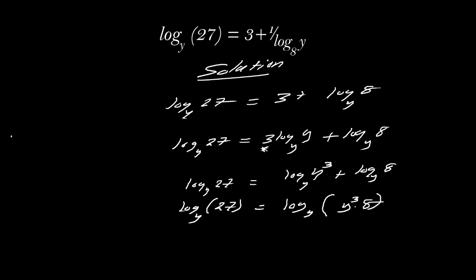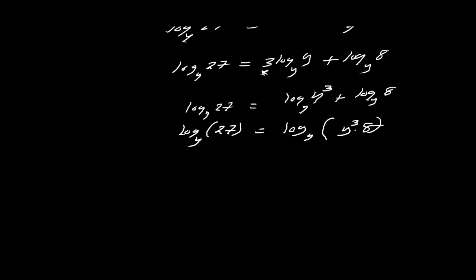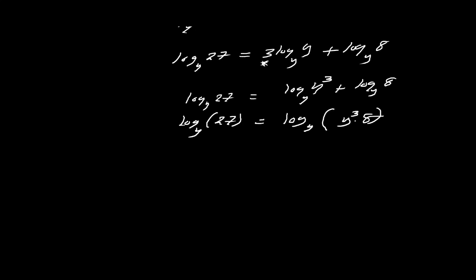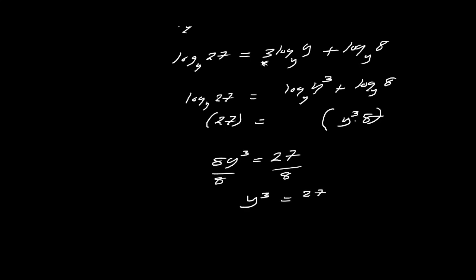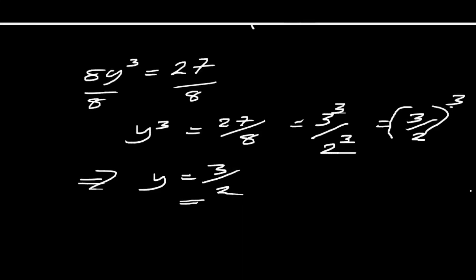We can now get rid of the logarithm on both sides of the equation. Ignoring the logs, we have 27 equals y³ times 8, which means 8y³ equals 27. Dividing both sides by 8 gives y³ equals 27 over 8. Since 27 is 3³ and 8 is 2³, we have y³ equals (3/2)³. Taking the cube root of both sides gives y equals 3 over 2. That is how we solve logarithmic equations with different bases — we ensure we have the same base.